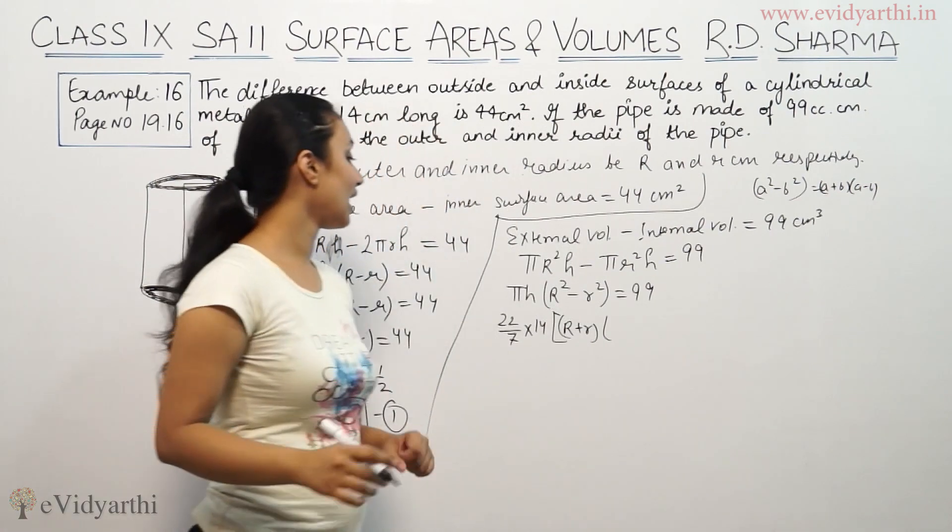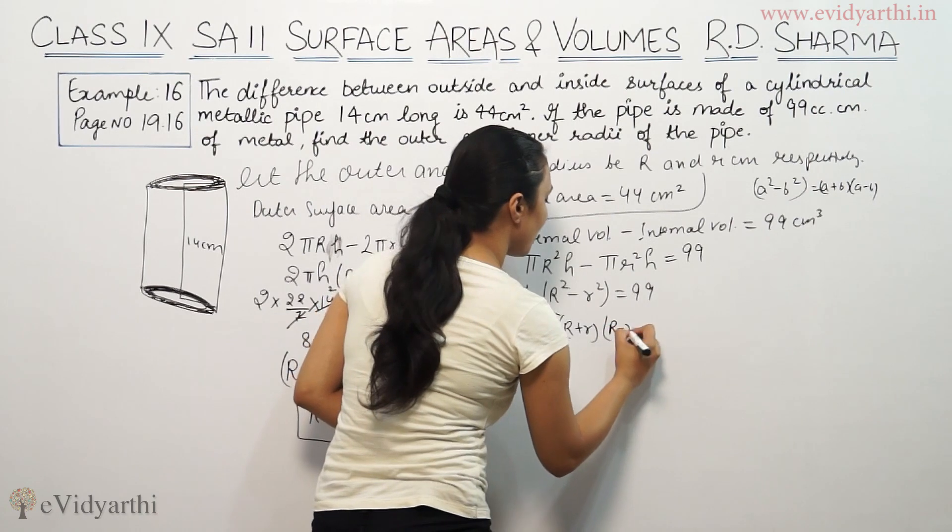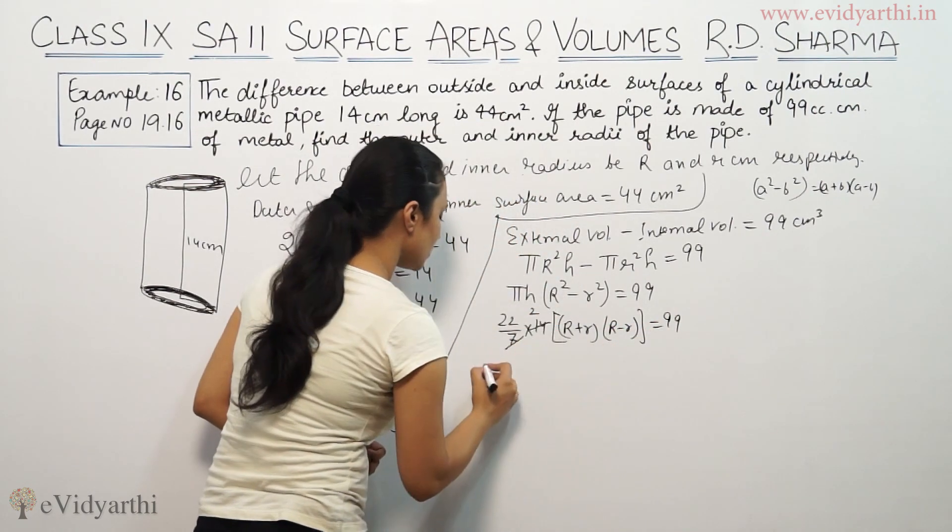The same thing we have here. R² - r² is (R + r)(R - r) = 99. This is the second equation.